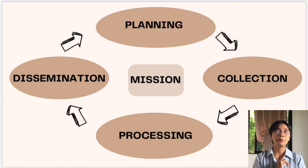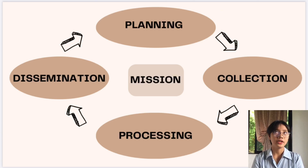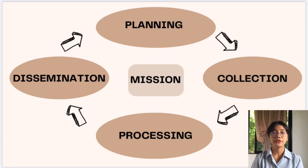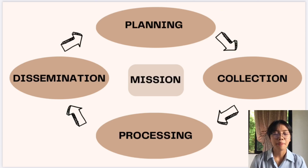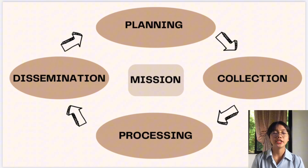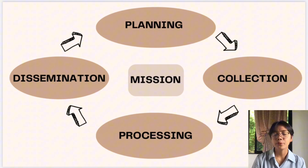Collection methods can range from surveillance and interception to interviews and research. One example of a collection method is surveillance — for instance, foot surveillance. Interviews and research are also needed in the intelligence cycle.